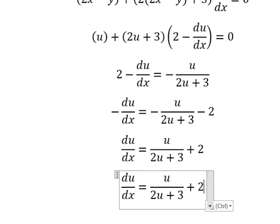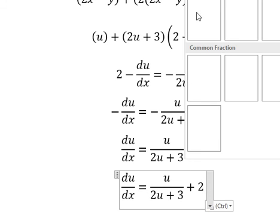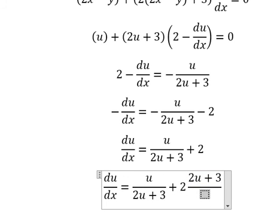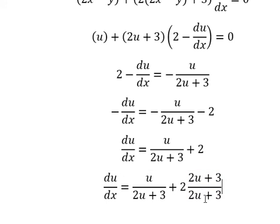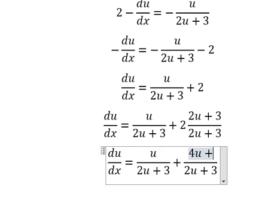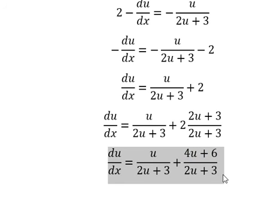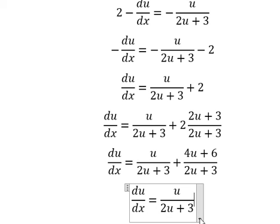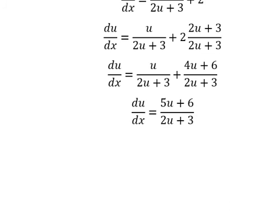Next, we do common denominator. So we multiply by 2u plus 3. Number 2 multiplied by 2u plus 3.